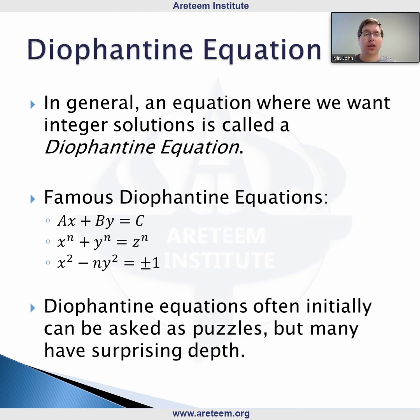For n greater than 2, x cubed plus y cubed equals z cubed, x to the fourth plus y to the fourth equals z to the fourth. That's Fermat's last theorem that was studied for hundreds of years, looking for a true proof. We also have x squared minus ny squared equals plus or minus 1, called Pell's equation.